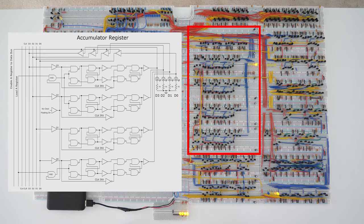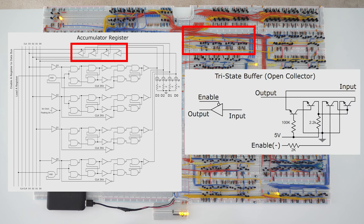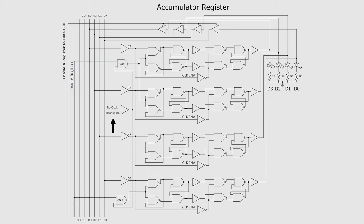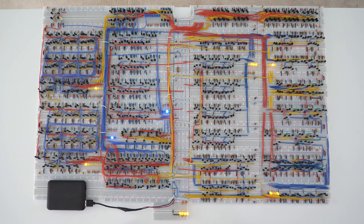The accumulator register is built with four master-slave data flip-flops. The top breadboard contains tri-state buffers, which allow the A register to send its current value to the data bus. Data is latched into the A register from the data bus when a load A command is sent from the control matrix. By having what is normally the clock input floating on — meaning the clock input is always on — the A register latches its value at the very end of a full clock cycle. This helps to ensure consistent latching behavior of the A register. The output of the A register is continuously being sent into the ALU.